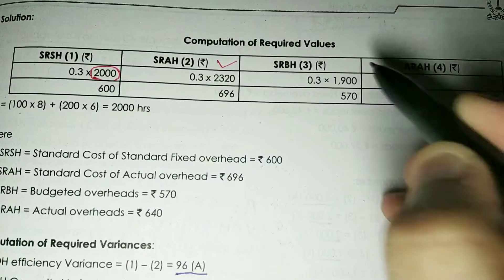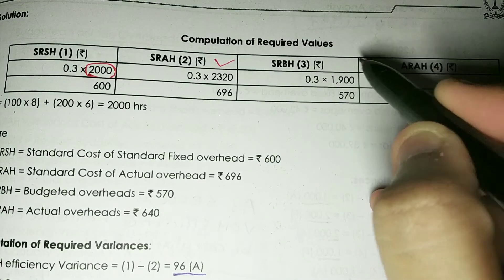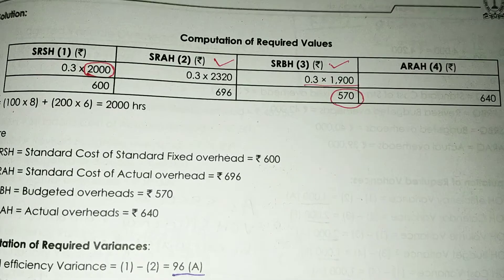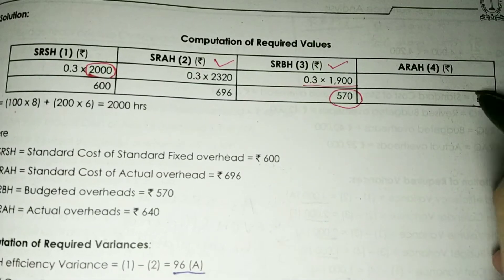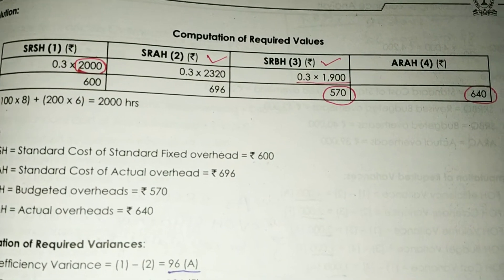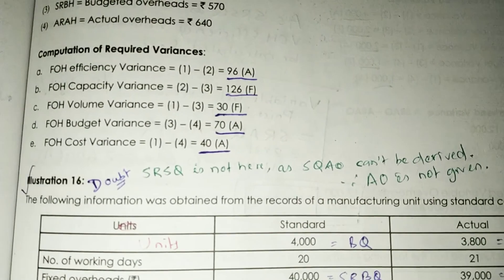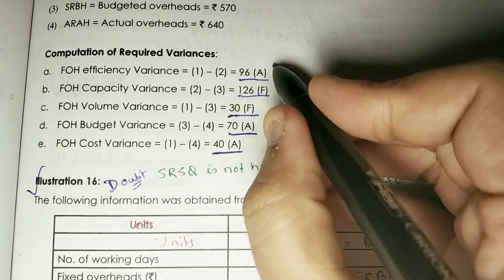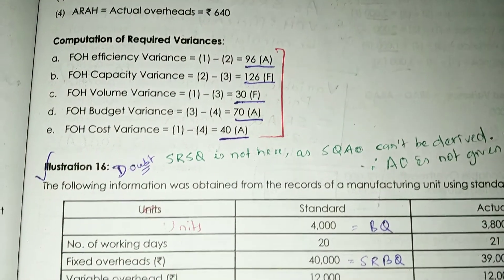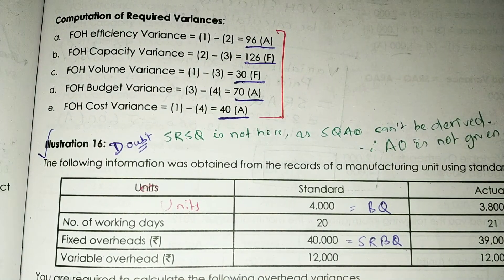SR × SH is now calculated. SR × BH (SRBH) was already given to you. The other values are also directly given. So now just put the formula and get all the answers. I hope this question is also clear to you.